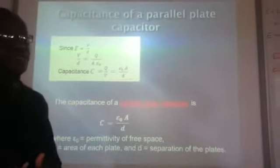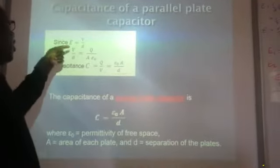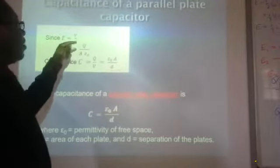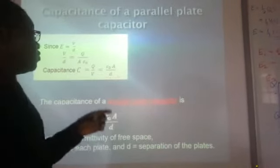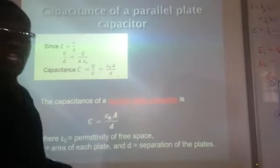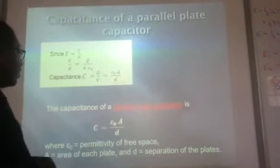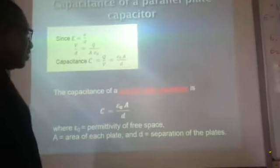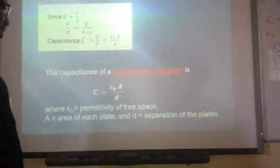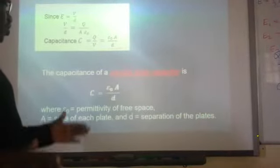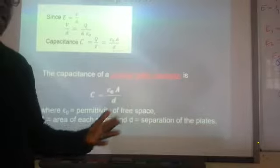Since the separation of the parallel plates is D and the potential between the plates is V, we have E = V/D = Q/(Aε₀). Therefore, the capacitance C = Q/V = ε₀A/D. This is the formula for the capacitance of a parallel plate capacitor, where ε₀ is the permittivity of free space, A is the area of the plates, and D is their separation. This means if the plates are close together the capacitance is large, and if they are far apart the capacitance is small.